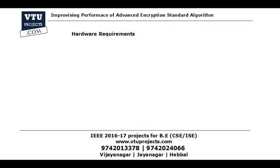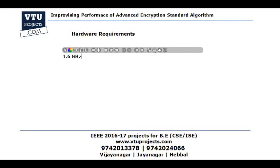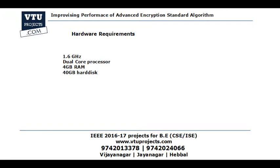Coming to the hardware and software requirements. For hardware, we will be requiring a machine with a 1.6 GHz dual-core processor, 4 GB of RAM, and 40 GB of hard disk. These are the minimum configurations required for implementing this project.